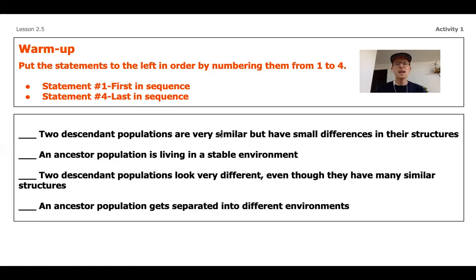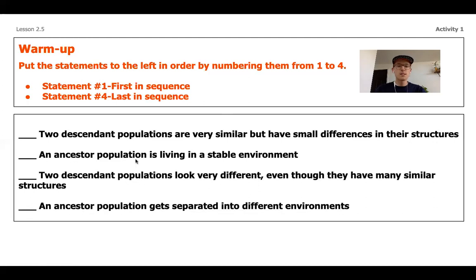I'm going to read through these. As I'm reading through, you're going to want to start thinking about what order they're in. And if you don't get it the first time, you can pause the video and reread them independently, or rewind the video. The statement that is first here says: two descendant populations are very similar but have small differences in their structures. An ancestor population is living in a stable environment. Two descendant populations look very different, even though they have many similar structures. An ancestor population gets separated into different environments.